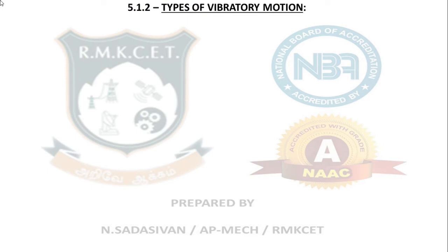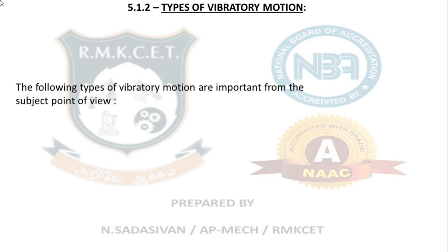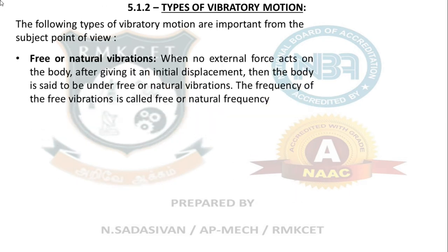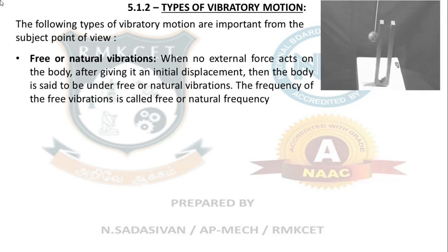Next are the types of vibratory motion. The following are the types important from your subject point of view. Apart from these there are other types in real life, but for now we constrain our studies to these. The first type is natural vibration.